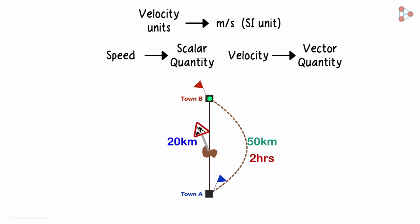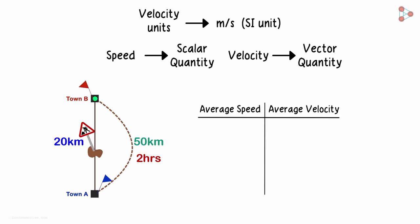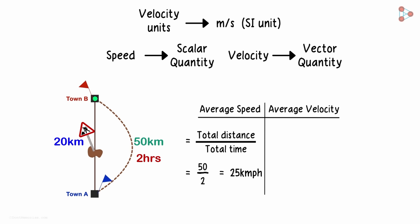Let's make two columns here. One for average speed and another for average velocity. Do you remember how we calculated average speed? Yes, it is the total distance covered over the total time taken. So 50 over 2 will give us 25 kilometers per hour as the average speed.